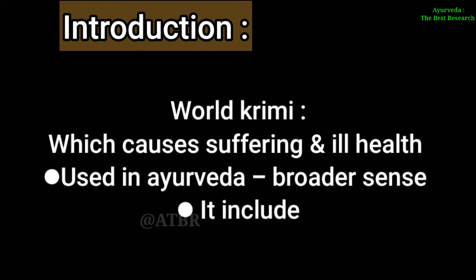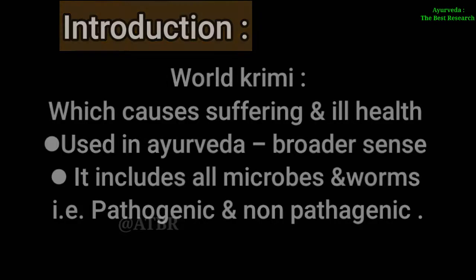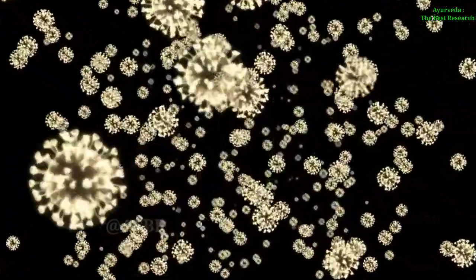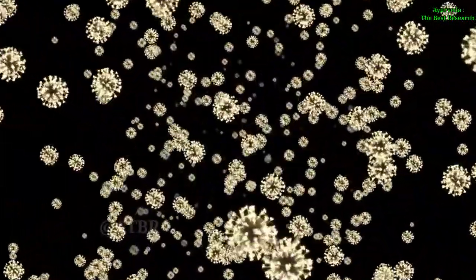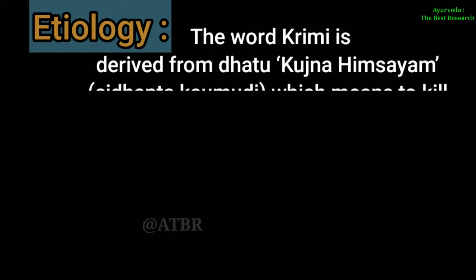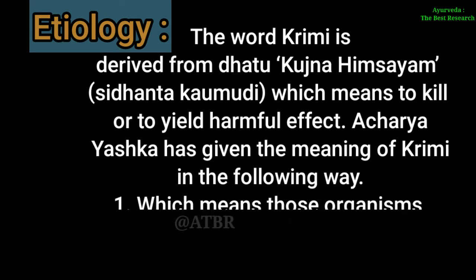The word Krumi means that which causes suffering or ill health. The word Krumi is used in Ayurveda in a broader sense — it includes all the microbes and worms, which are pathogenic as well as non-pathogenic. It is one of the Annavaha Srotagata Vikaram. The word Krumi is derived from the Dhatu Kodmiya Himsayam, which means to kill or to cause harmful effect.